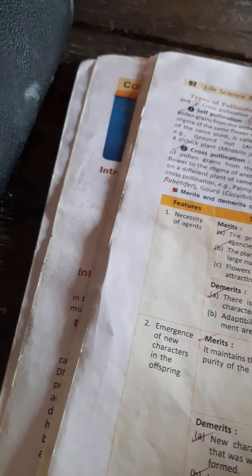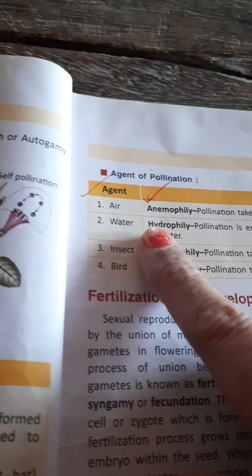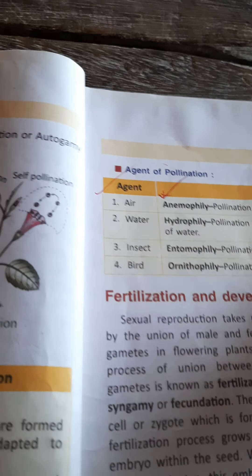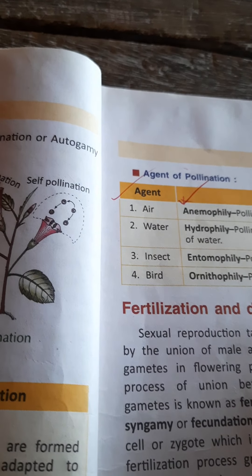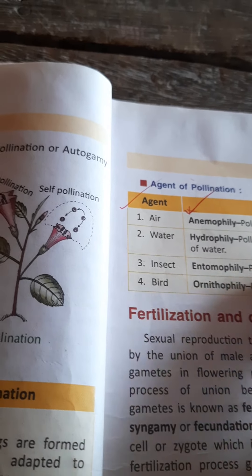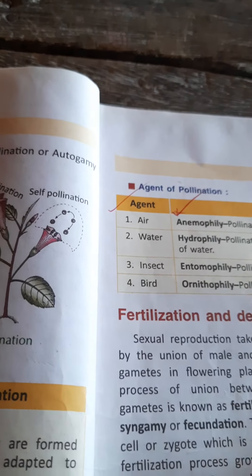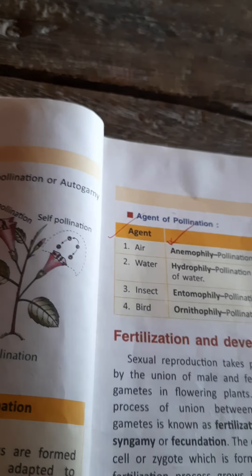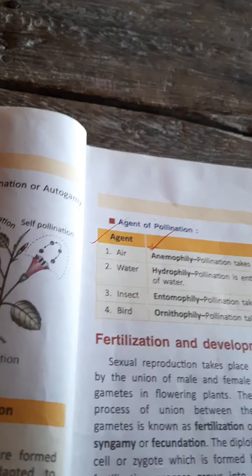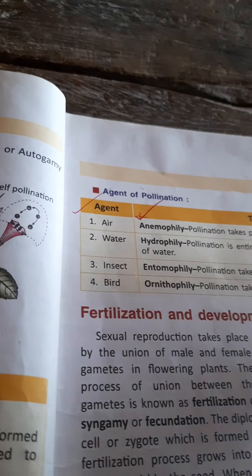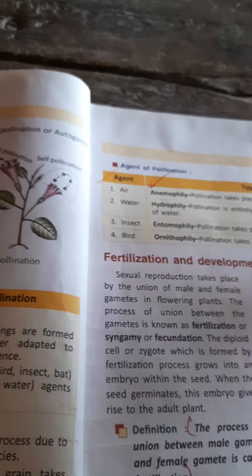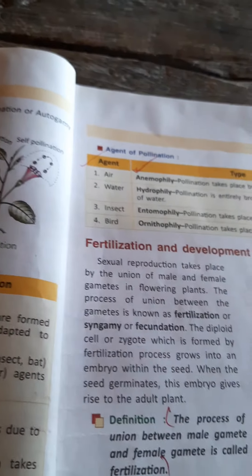Agents of pollination: Hydrilla — water; mango — insect; semul — bird. For example: paddy — wind; hydrilla — water; mango — insect; semul — bird. Understand the agent of pollination for each plant.